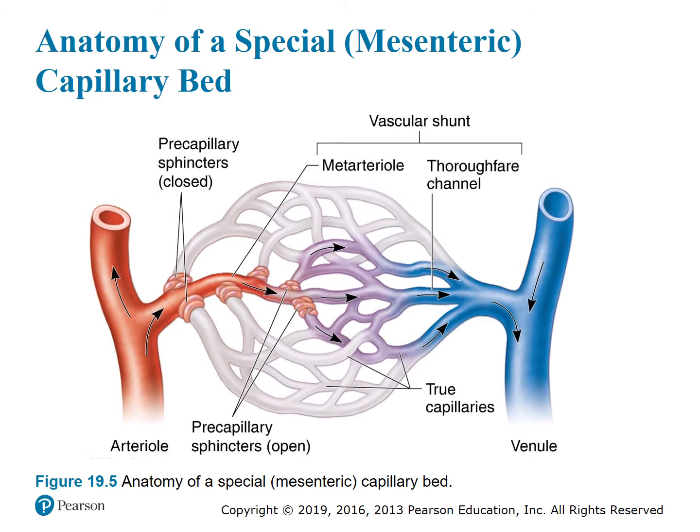Figure 19.5 shows these special arrangements in the capillary bed: the vascular shunt bypassing the capillary bed from the meta-arteriole to the thoroughfare channel, and pre-capillary sphincters that when closed cause blood to flow directly from the arteriole to the venule.